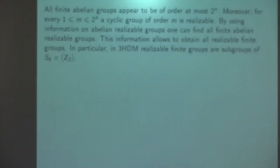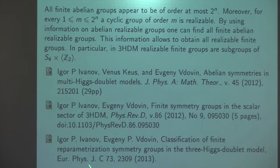For example, for the three-doublet model we proved that all realizable finite groups are subgroups of a very particular group, and we proved that each subgroup is realizable. We found all possible potentials with this property. This is the list of papers where all of this is published, and the last paper is quite recent — it is published in JBCM. Thank you.